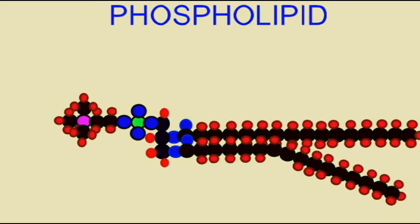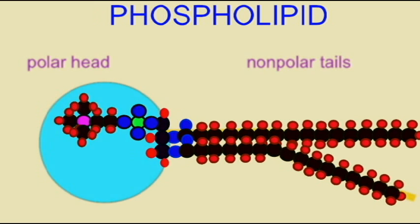Because of these two types of groups, the phosphate group and these fatty acids, a phospholipid has a polar or charged head region and the nonpolar tails are uncharged.